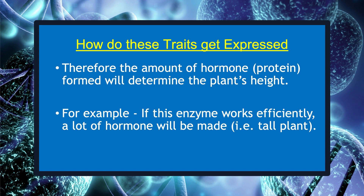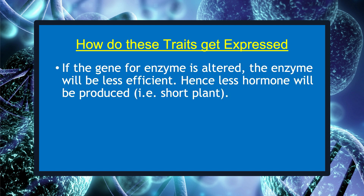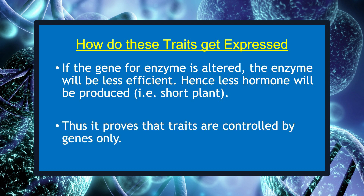Consider an enzyme that is important for this process. If this enzyme works efficiently, a lot of hormone will be made and the plant will be tall. If the gene for that enzyme has an alteration that makes the enzyme less efficient, the amount of hormone will be less and the plant will be short. Thus, genes control characteristics or traits, and traits get expressed in future generations.